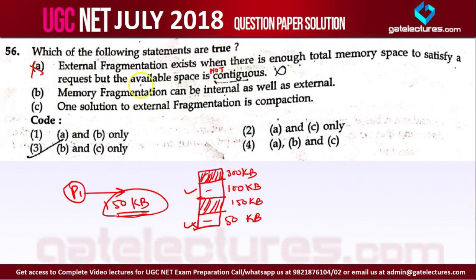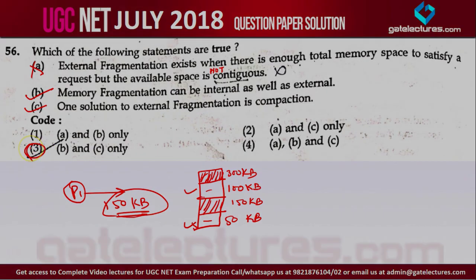It is asking whether memory fragmentation can be internal as well as external — this is true. Fragmentation can be internal as well as external. For example, in paging we have internal fragmentation and in segmentation we have external fragmentation. One solution to external fragmentation is compaction, which is also true. So options B and C are correct, meaning 3 is the right answer for this question.